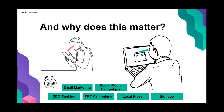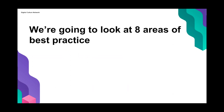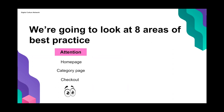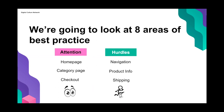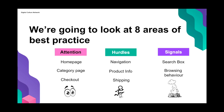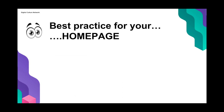We're going to be looking at eight areas of best practice: how we can use attention on the home page, the category page, and in the checkout; thinking about hurdles when shopping online and how to get people over those; and thinking about the signals our users can give us. Let's start with home pages.